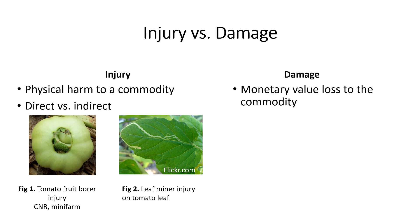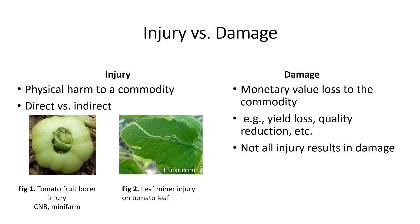Damage is the monetary value loss to a commodity as a result of pest injury. The value loss can be in terms of return or its utility — for example, yield loss, quality reduction, etc. All injuries do not result in damage, meaning they do not always cause economic losses or minimize the value of usage. Some injuries are acceptable or tolerable.